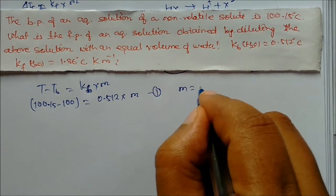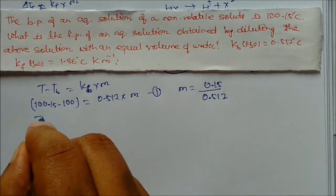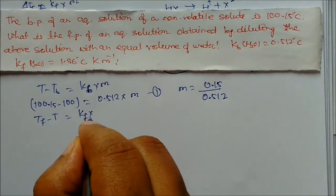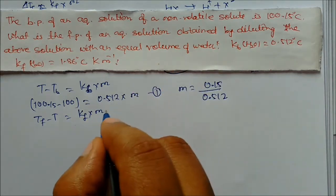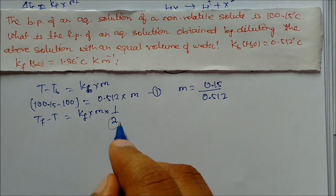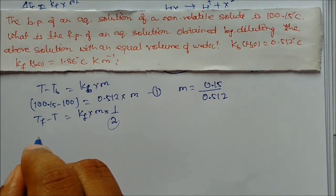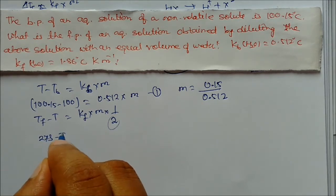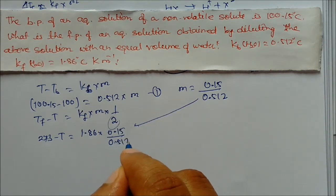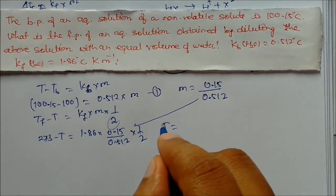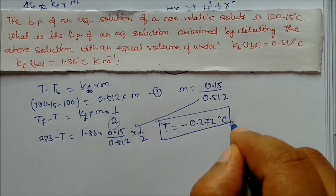From that equation, molality = 0.15 / 0.512. Now for the diluted solution: adding equal volume of water doubles the solvent, so effective molality is halved. Using delta Tf = Kf × m: 273 minus T = 1.86 × (0.15/0.512) × (1/2). Solving, T = minus 0.272 degree centigrade. This is our value.